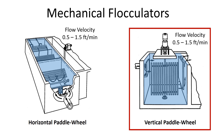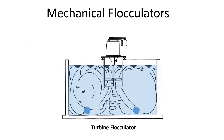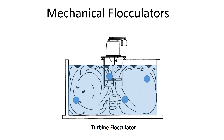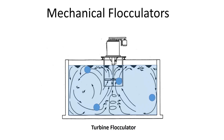Another type of mechanical flocculator is the turbine flocculator, which could be a propeller or a turbine. It creates turbulence with a circular or circulating flow so that particles can collide with one another and agglomerate together. All of these flocculators can be adjusted as far as the amount of mixing energy they provide to the particular basin they're in.